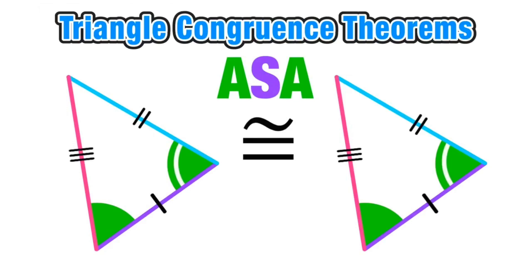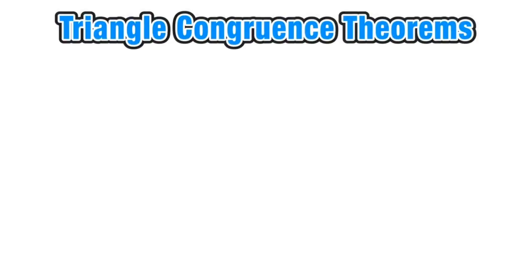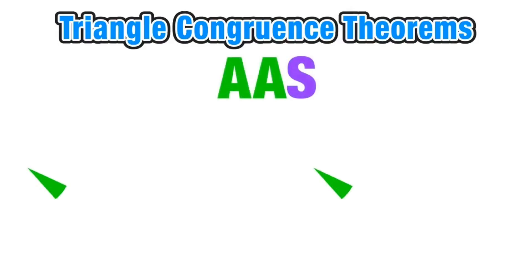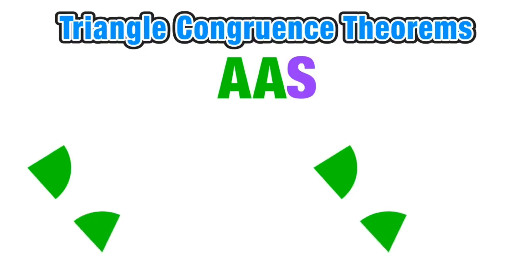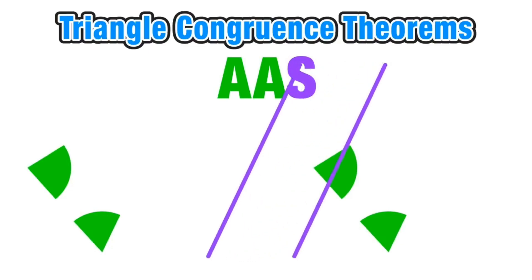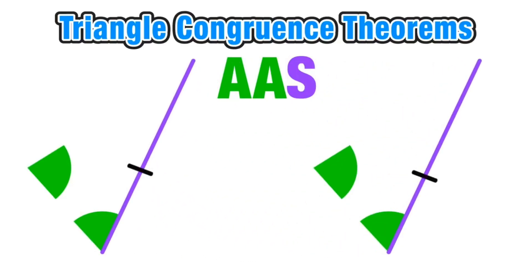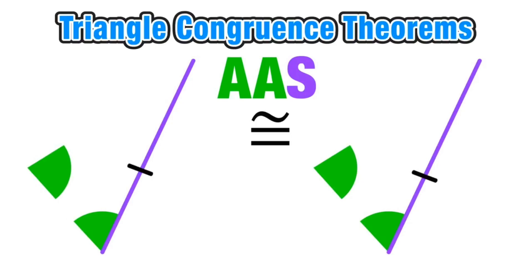Our next theorem is very similar to Angle-Side-Angle — it's called Angle-Angle-Side. When in two triangles we have a pair of corresponding congruent angles, a second pair of corresponding congruent angles, and a pair of corresponding congruent sides. We don't want to confuse Angle-Side-Angle with Angle-Angle-Side, because both involve two congruent angles and one congruent side. The difference is that in Angle-Angle-Side the congruent angles are consecutive — one after the other — and the congruent side is next to them instead of in between them.